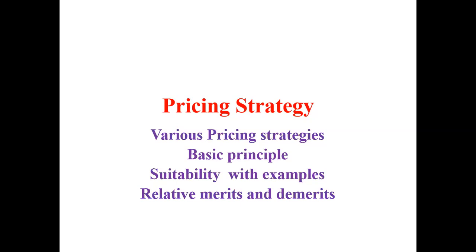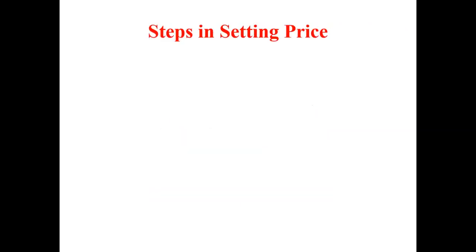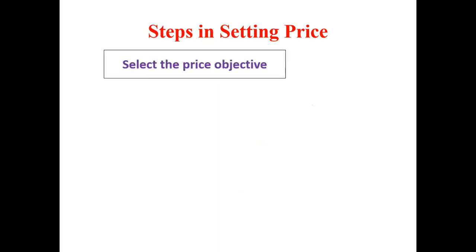Pricing is very important and must be processed in a very systematic and stepwise manner. Let us see what are the steps involved in the selection of a price for a product. The first step is to select the pricing objective. As I told you in the last lecture, organizations may have different objectives while setting the price — they may want to survive in the market, become the product leader, or maximize their profit.